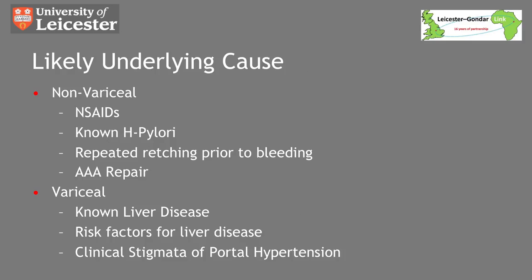Whilst taking the history and examining your patient it is important to make some inquiry as to the likely cause of the bleeding. Has your patient been taking NSAIDs, which may make you think about ulcer disease? Retching prior to the bleeding starting would make you think of a Mallory-Weiss tear, and a previous aortic aneurysm repair may make you think about an aortoenteric fistula, which needs to be diagnosed with an urgent CT scan. If your patient is known to have liver disease, has risk factors such as high alcohol intake, fatty liver disease or viral hepatitis, or clinical stigmata of portal hypertension on examination, you would be suspicious that varices may be causing the bleeding.